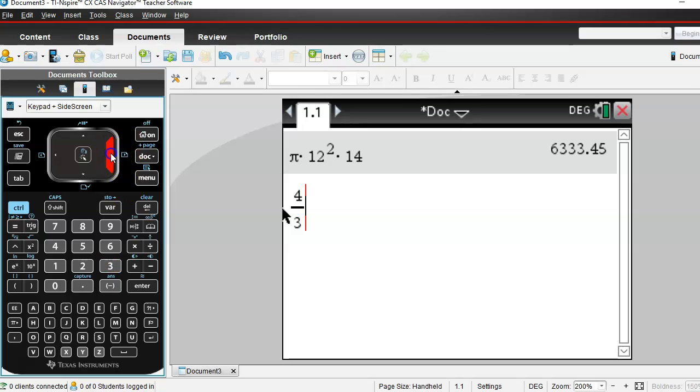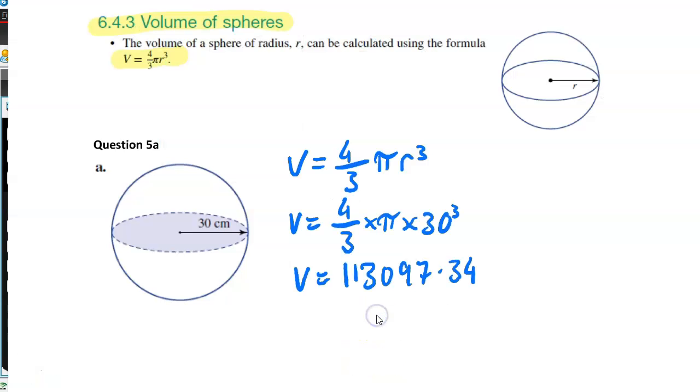Obviously, if you're finding half a sphere, you would then times your answer by a half. If you're finding a quarter of a sphere, you times it by a quarter. So look at what you're trying to find. So our volume is 113,097.34 cubic centimeters.